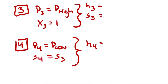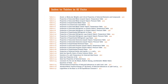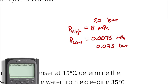Remember, the first part of the lookup process is to fix the phase at all four state points. Once I know the phase, I can go into the correct table and evaluate the properties I need. Starting with state 1, I have a pressure of 0.075 bar and a quality of 0, meaning I'm going to grab the saturated liquid property from my saturation tables by pressure.